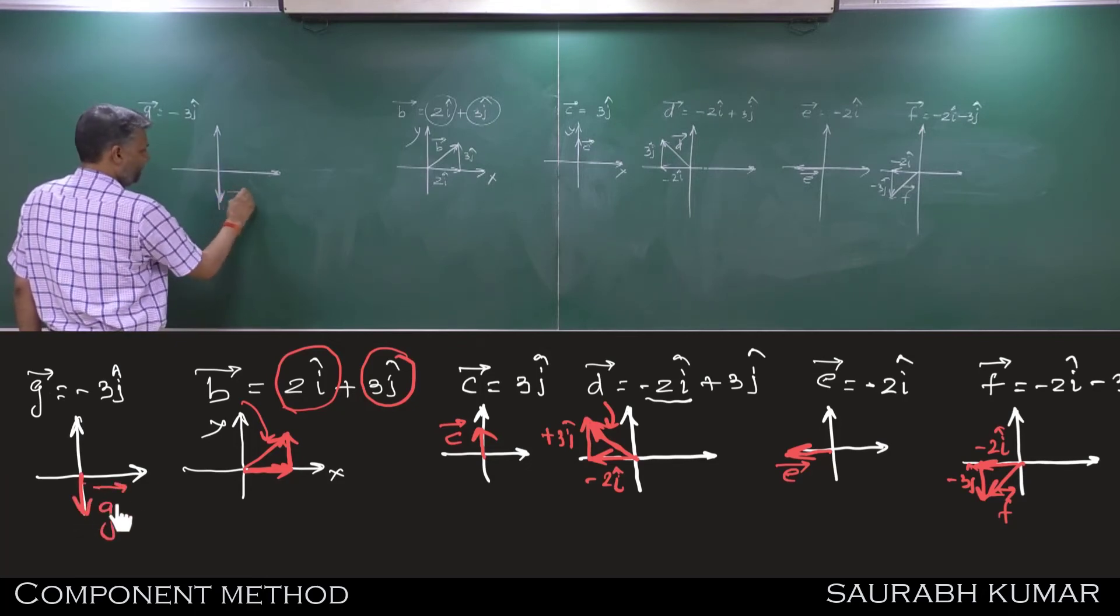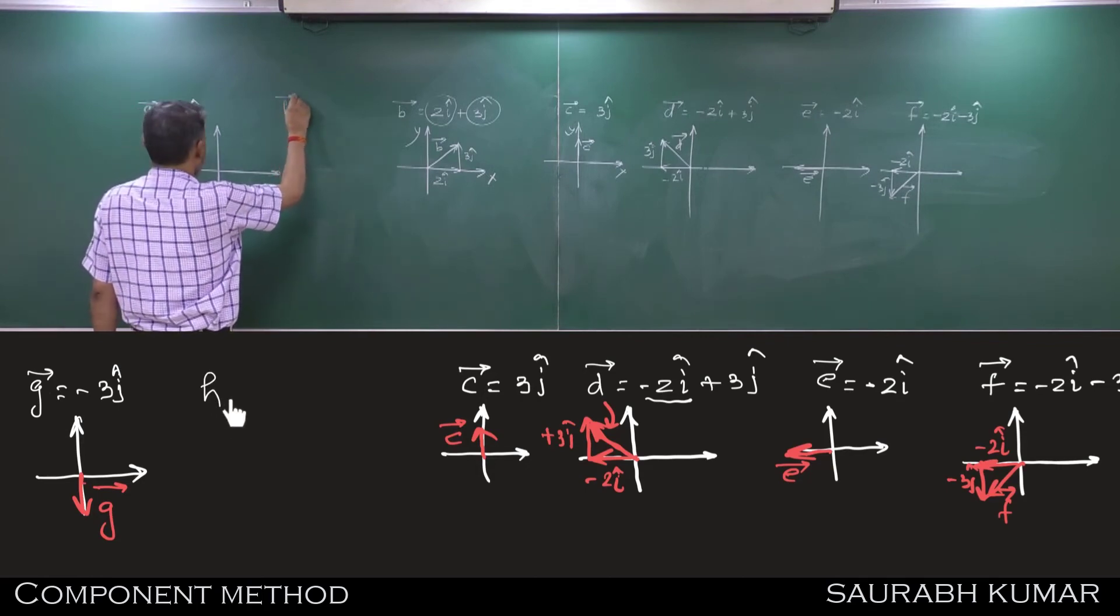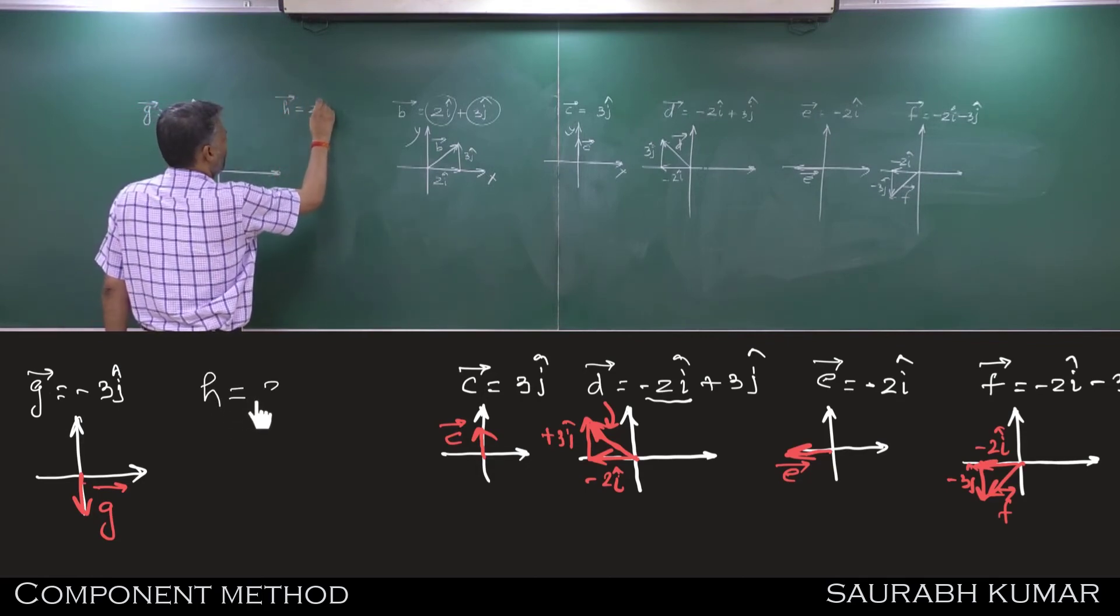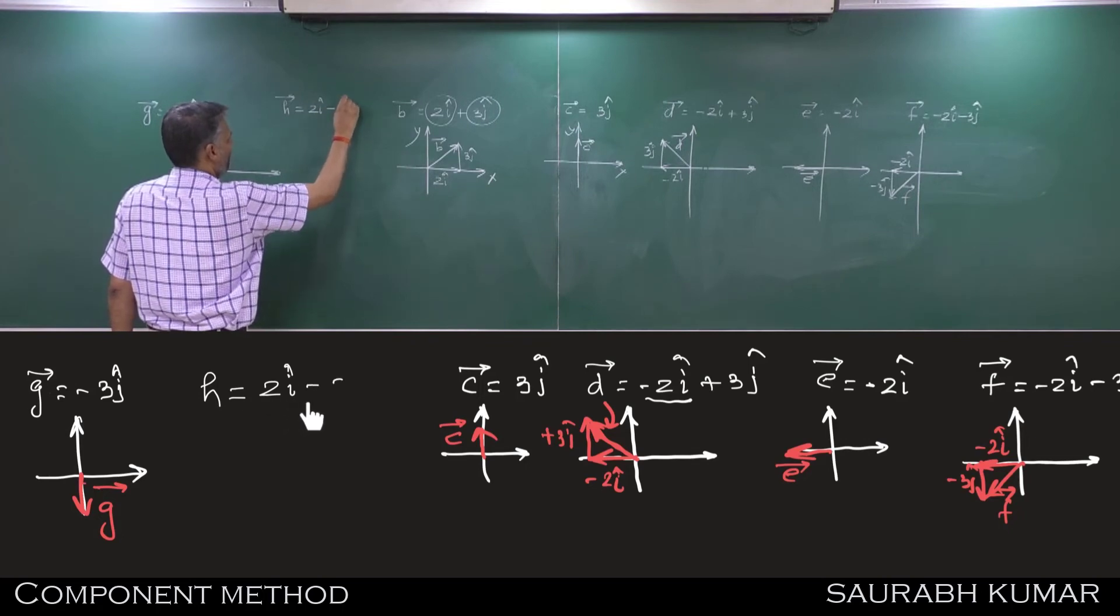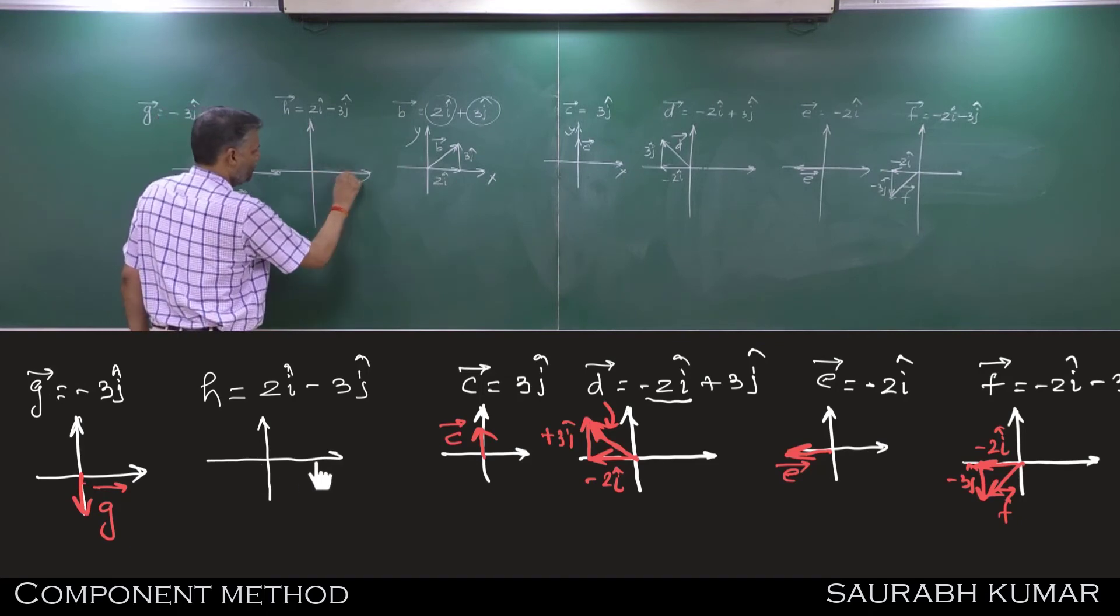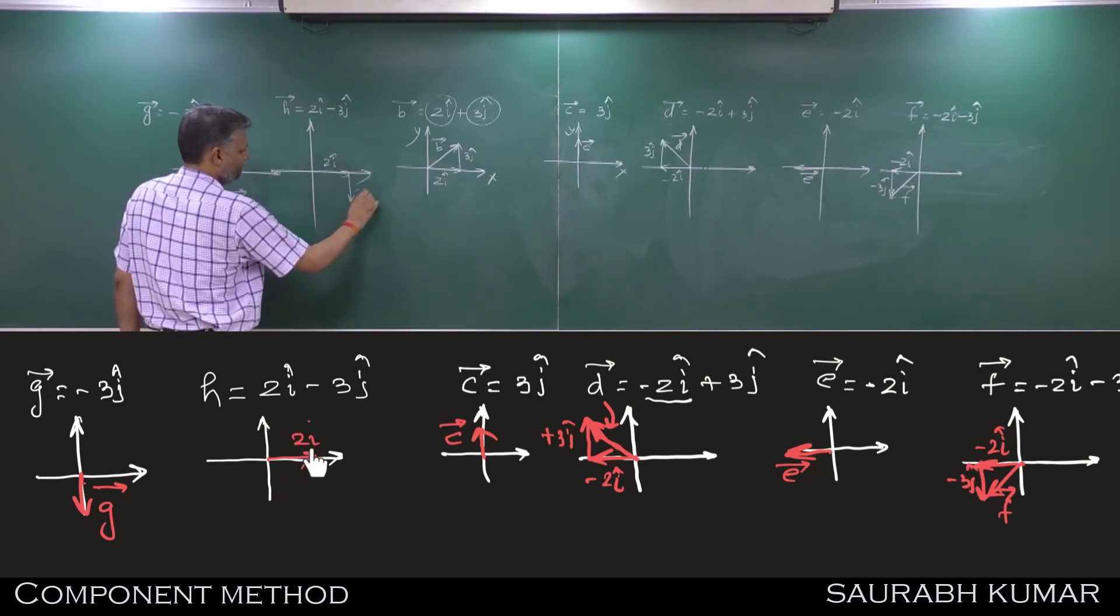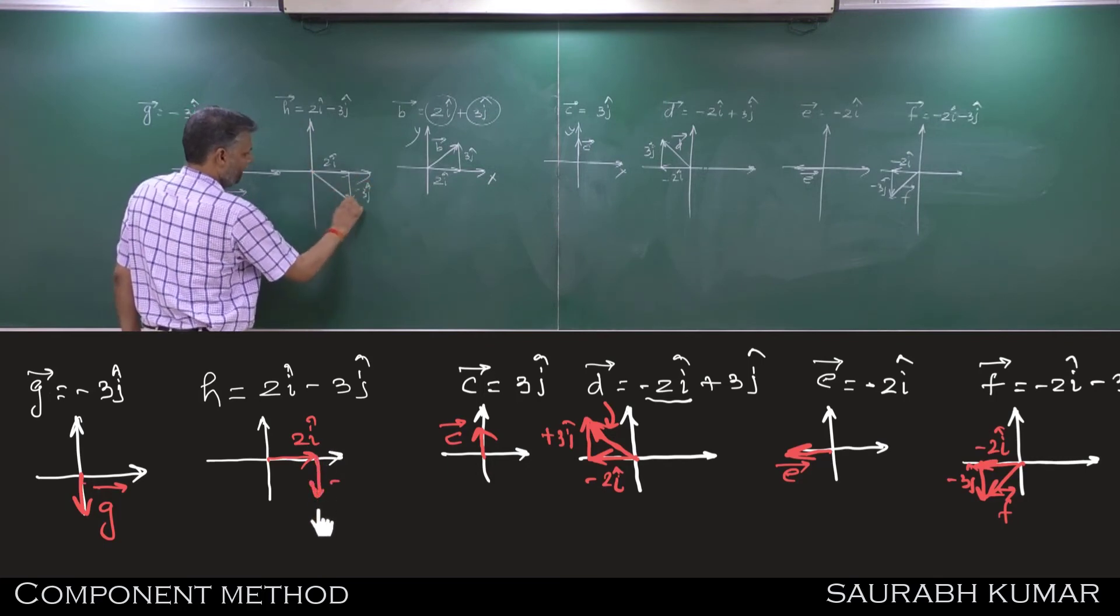Vector G then vector H, 2i cap minus 3j cap. Fourth quadrant. 2i cap minus, this is vector H.